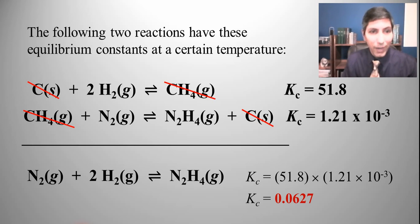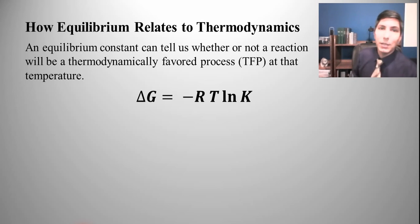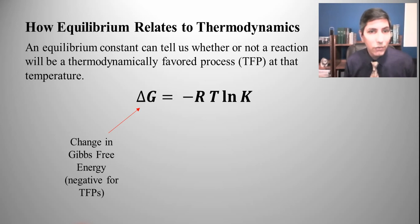Here's a third and final application of equilibrium constants in this video. And that's how equilibrium relates to thermodynamics. An equilibrium constant can tell us what the delta G value of a reaction is going to be, and if it's going to be a thermodynamically favored process or TFP at that temperature. Delta G equals negative RT natural log of K. Delta G is the change in Gibbs free energy. If you have a negative value for delta G, that means it is thermodynamically favored.